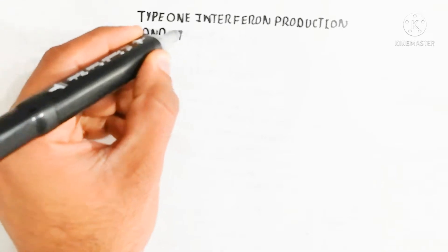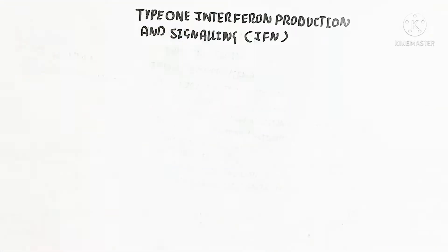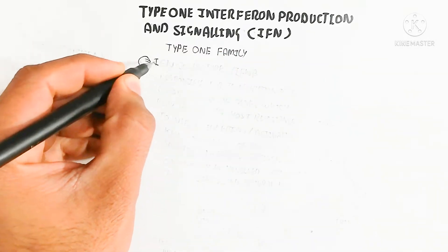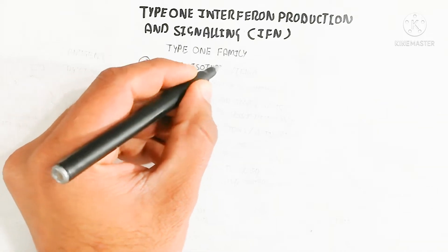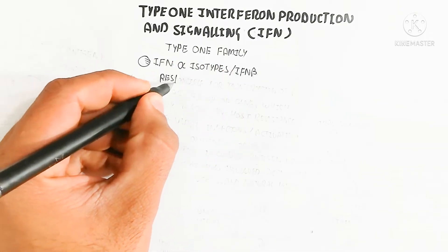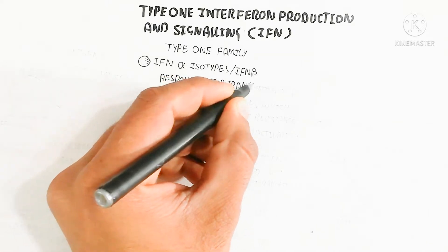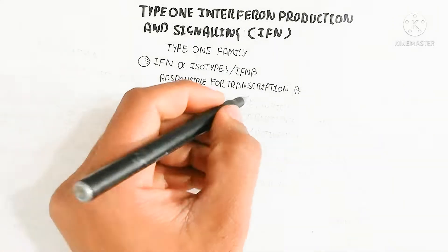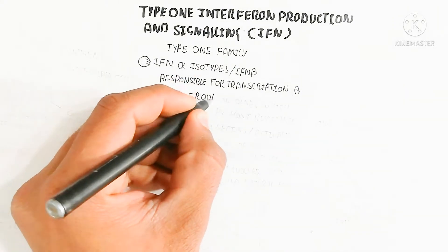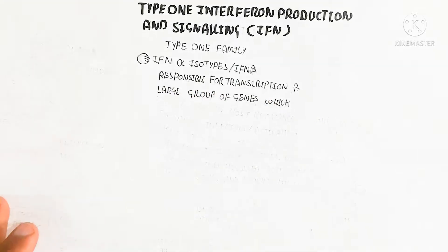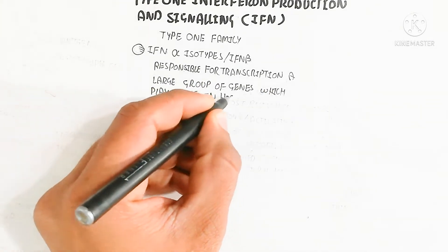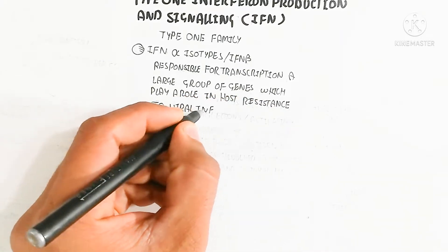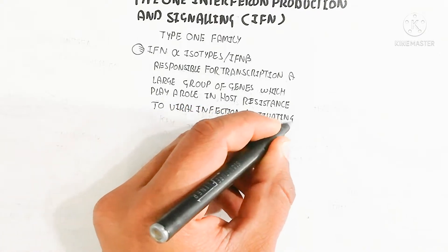The type 1 interferon family basically includes the interferon alpha iso types and interferon beta. This is responsible for the transcription of a large group of genes present in the cell, which play a role in host resistance to viral infection. Our cell will resist viral infection, as well as activating key components of innate and adaptive immune systems, including antigen production, cytokine production, and activation of T cells, B cells, and natural killer cells.